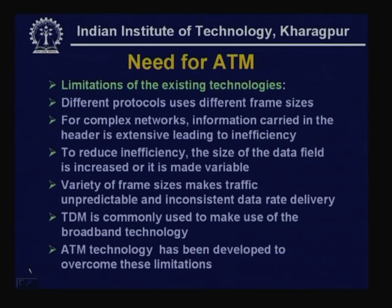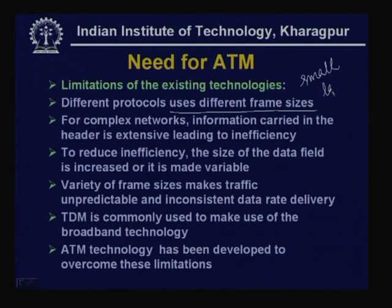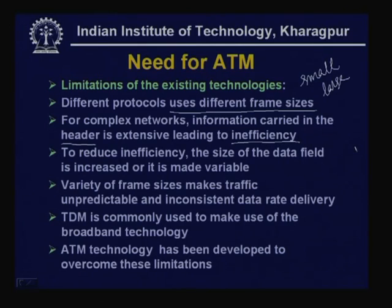Let us start with the need for ATM. Looking at existing technologies, several limitations exist. First, different protocols use different frame sizes — variable sizes — and for complex networks, information carried in the header is extensive, leading to inefficiency. A bigger header means higher overhead and inefficiency. To reduce inefficiency, the size of the data field is increased or made variable.